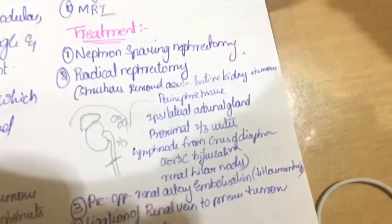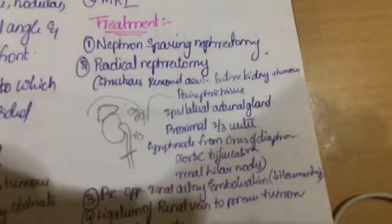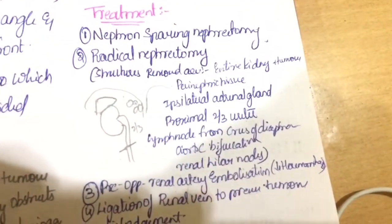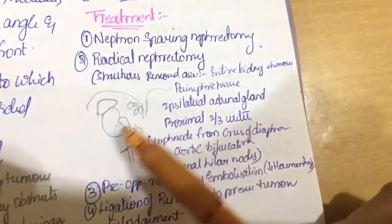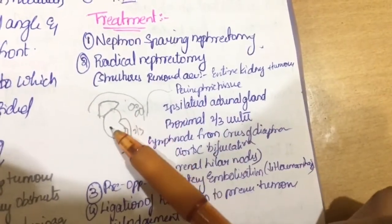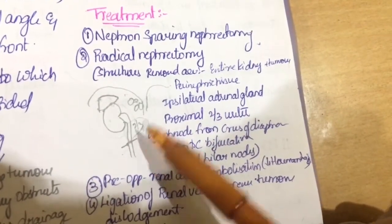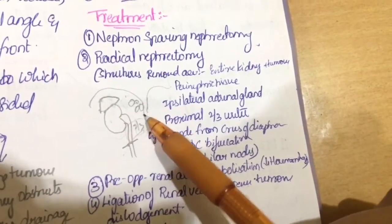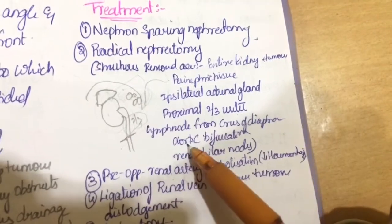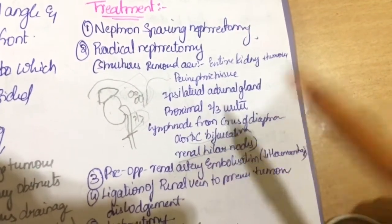The structures removed in radical nephrectomy are entire kidney, perinephric tissue, ipsilateral adrenal gland, perinephric tissue, ipsilateral adrenal gland and ureter up to proximal two-third. And lymph nodes located near the crux of the diaphragm and aortic bifurcation and renal hilar lymph nodes.